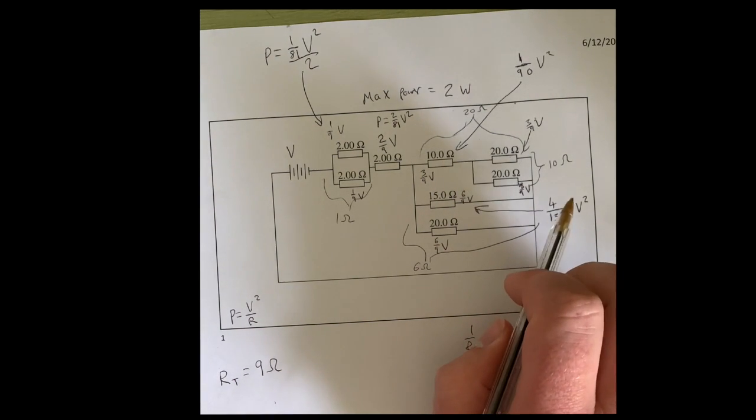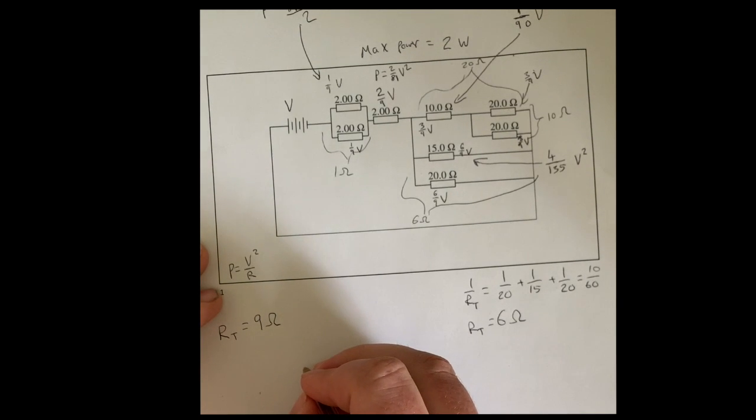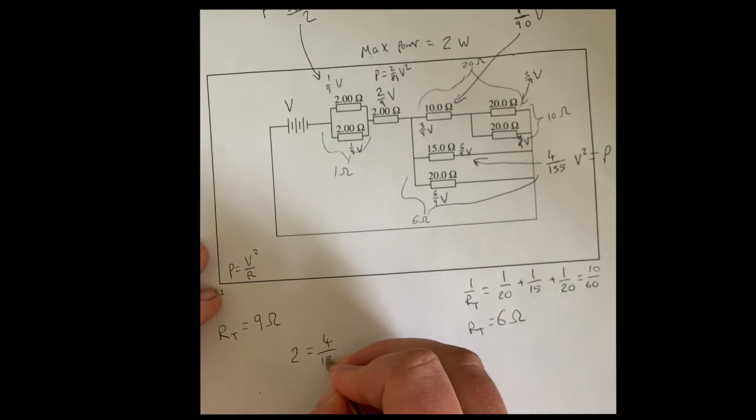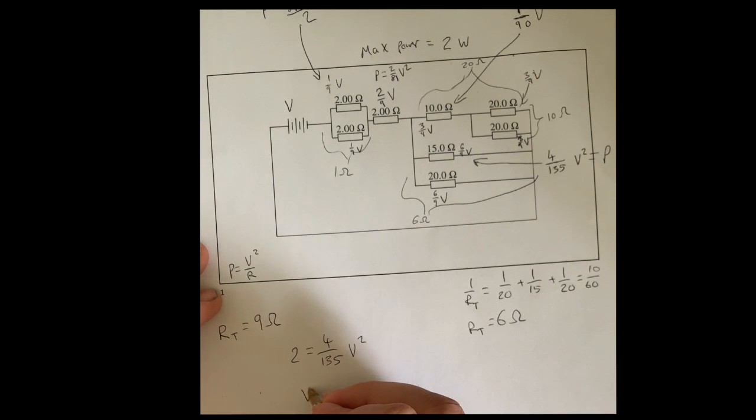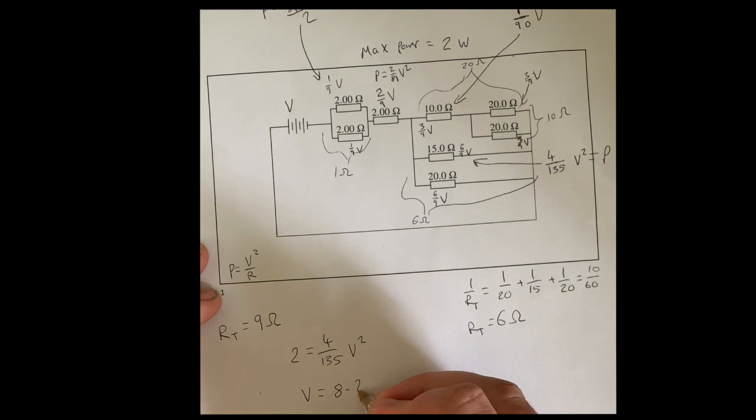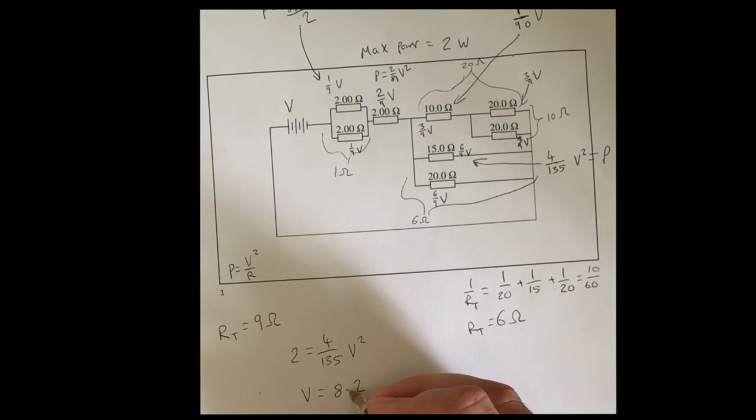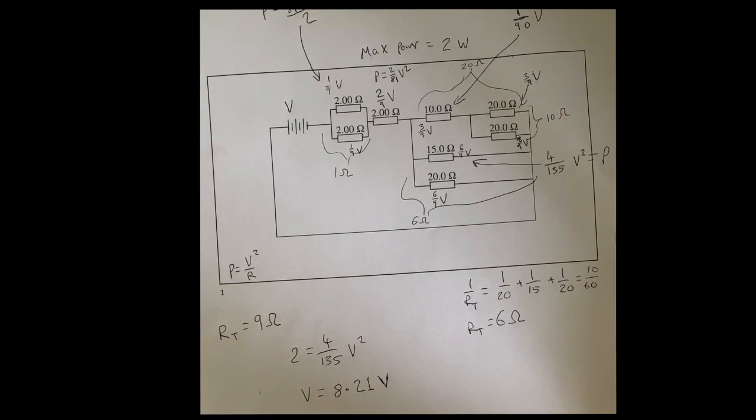So this resistor dissipates the most power, so this is the one that we're interested in. What we want to do is we want to make four over 135 V squared equal to two watts. That's the power this is dissipating. We want to make sure that's two watts. So I'm going to say two equals four over 135 V squared, and then we can solve for V squared. And we end up finding that V is then 8.2. But it actually says the minimum voltage, so we're going to go with 2.1 volts. So anyway, that's the answer. Hopefully you're able to follow that video. If you want me to try one of the other methods, then I'll get my head around that and send you a different video.